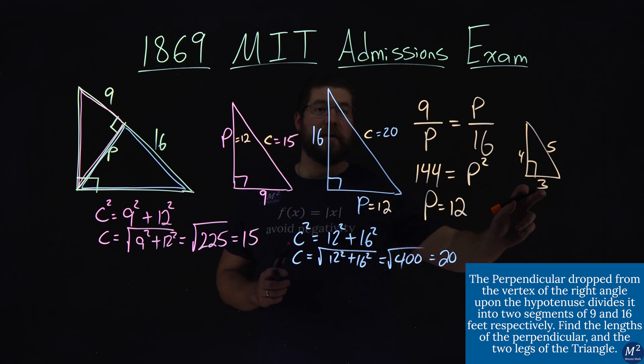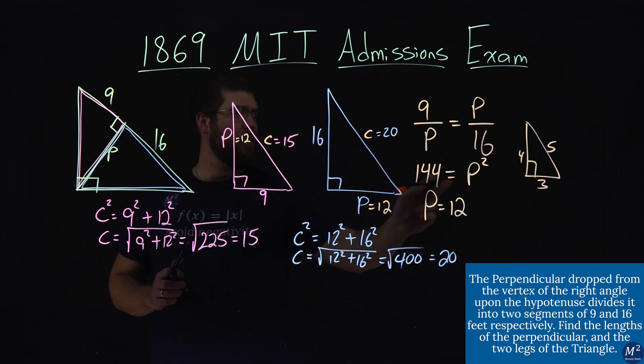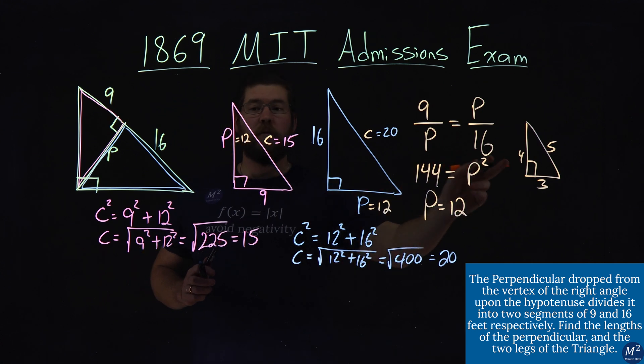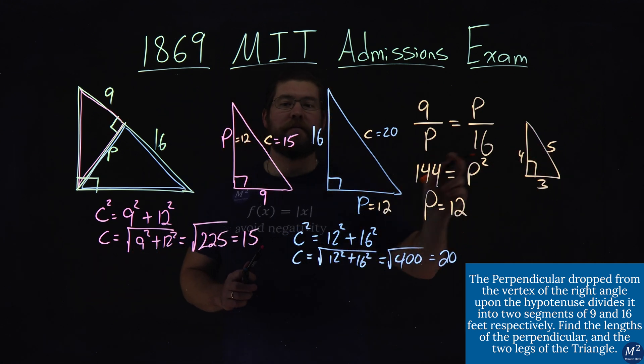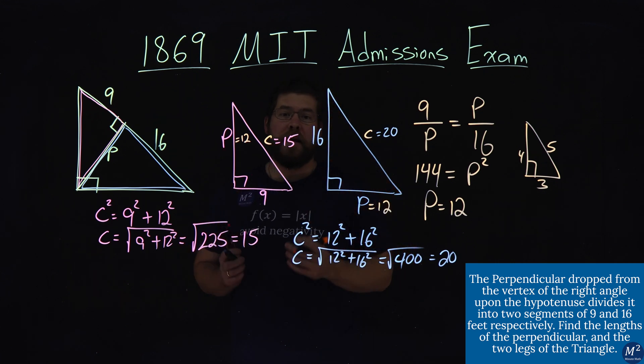Notice here, multiply 3 times 4 gets me the 12, 4 times 4 is 16, and then 4 times 5 is 20. Same thing here, what we found. 3 times 3 is 9, 4 times 3 is 12, and 5 times 3 is 15. But either way, we have our answers here. We had the lengths of 15 and 20, as well as a p-value of 12.